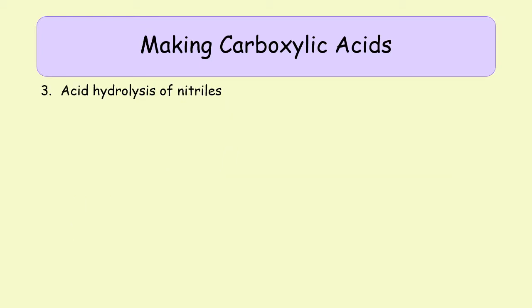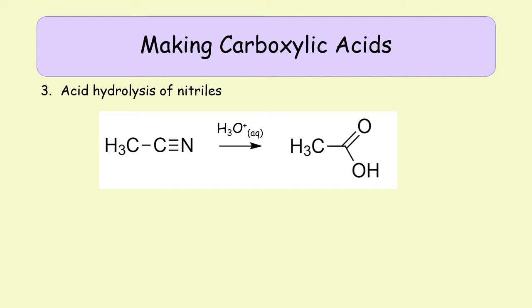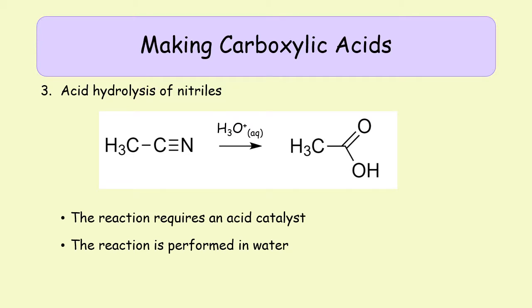The third way of making carboxylic acids is by taking a nitrile. A nitrile is made by doing a nucleophilic substitution reaction on a haloalkane using potassium or sodium cyanide, producing that C≡N group. If you add dilute acid, represented as H₃O⁺(aq), you can turn it into a carboxylic acid. You don't need to know the mechanism — just that it requires an acid catalyst and must be performed in water, so writing H₃O⁺(aq) covers all bases.